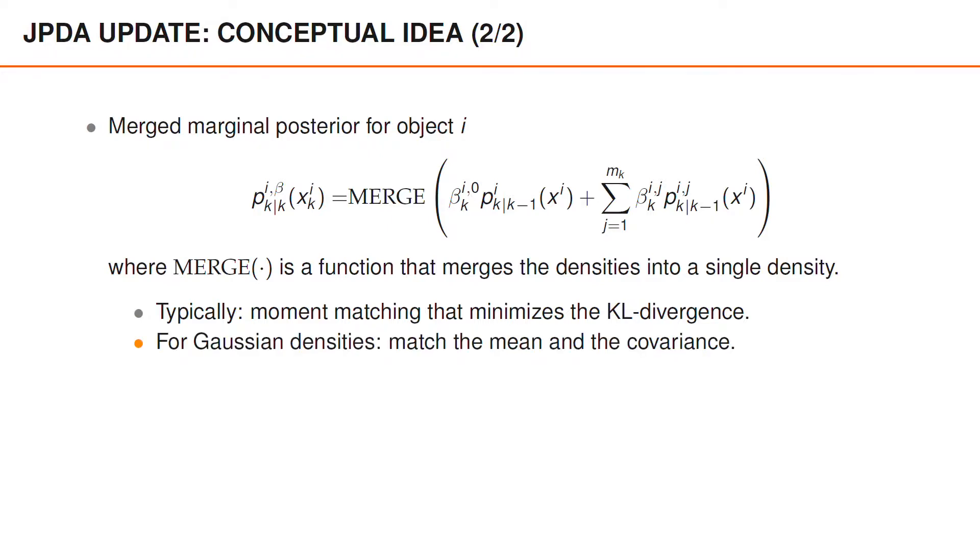For Gaussian densities, this corresponds to matching the mean and matching the covariance. And lastly, the posterior density for the n-objects is the product of the merged marginal posteriors.